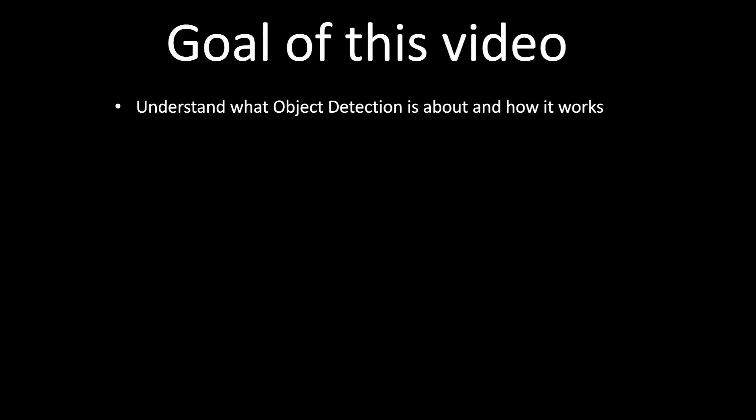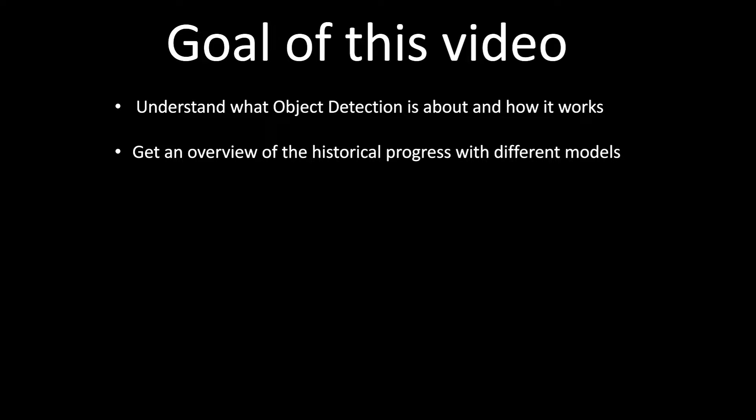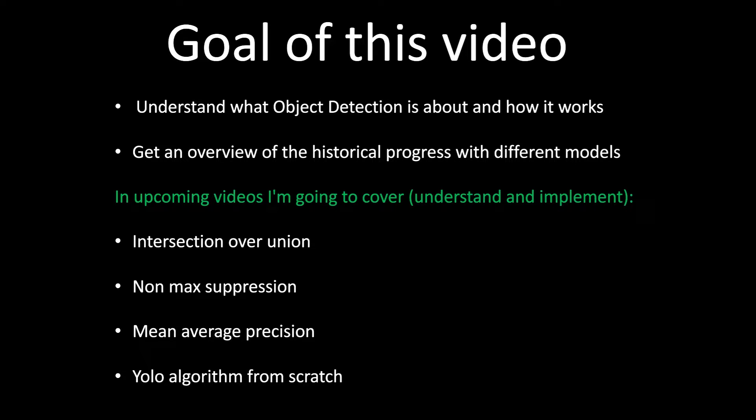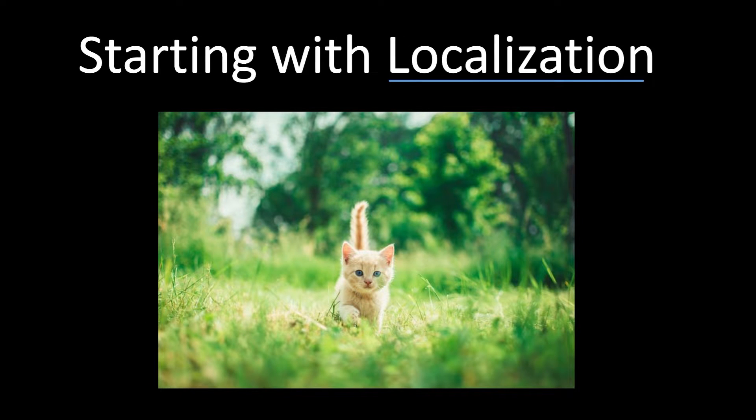Let's start with the goals of this video. First, we want to understand what object detection is and how it works. Then we want to get an overview of the historical progress with different model architectures. In upcoming videos we're going to cover and implement in PyTorch: intersection over union, non-max suppression, mean average precision, and then the YOLO algorithm from scratch.